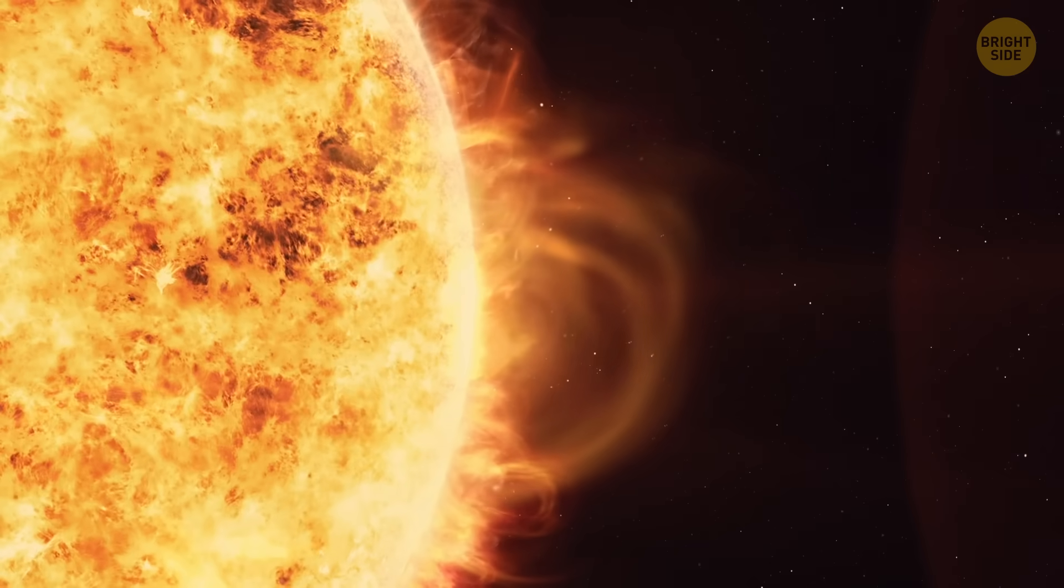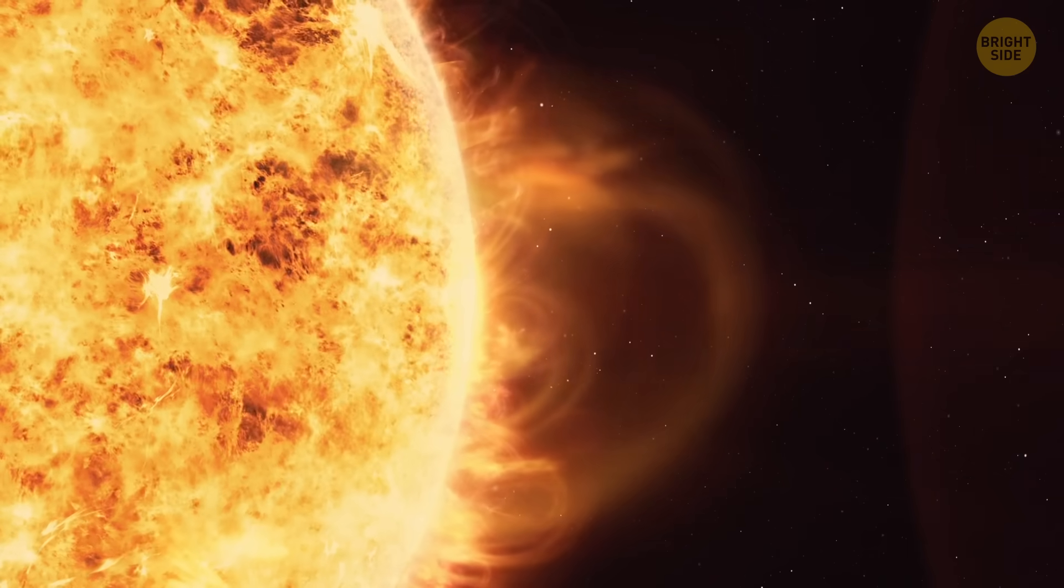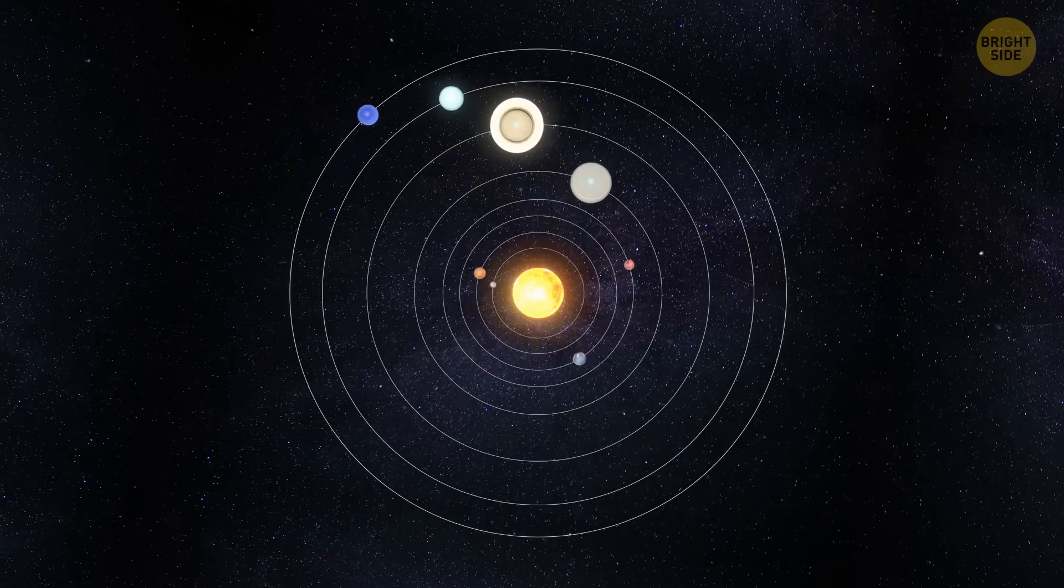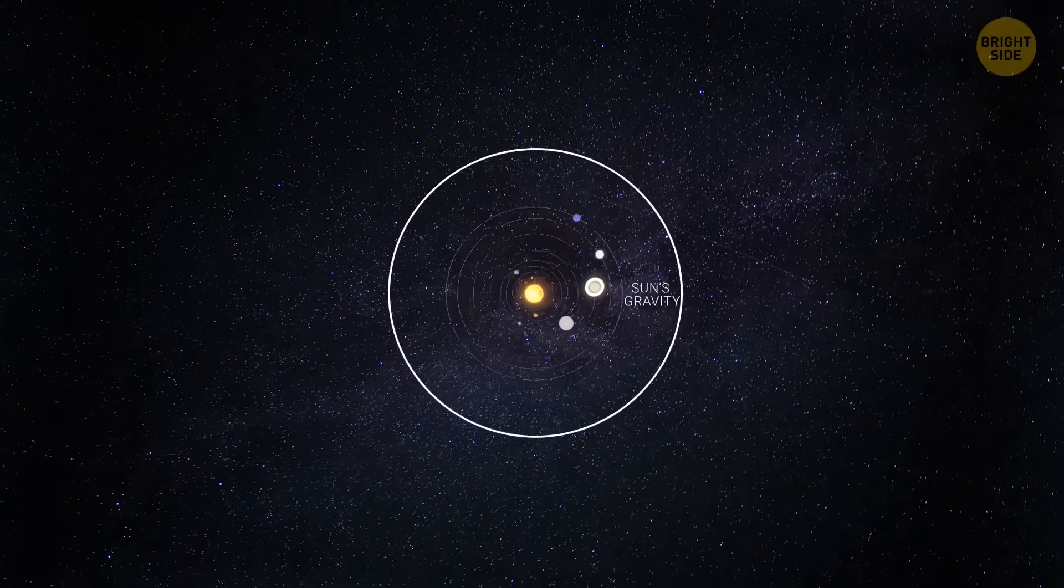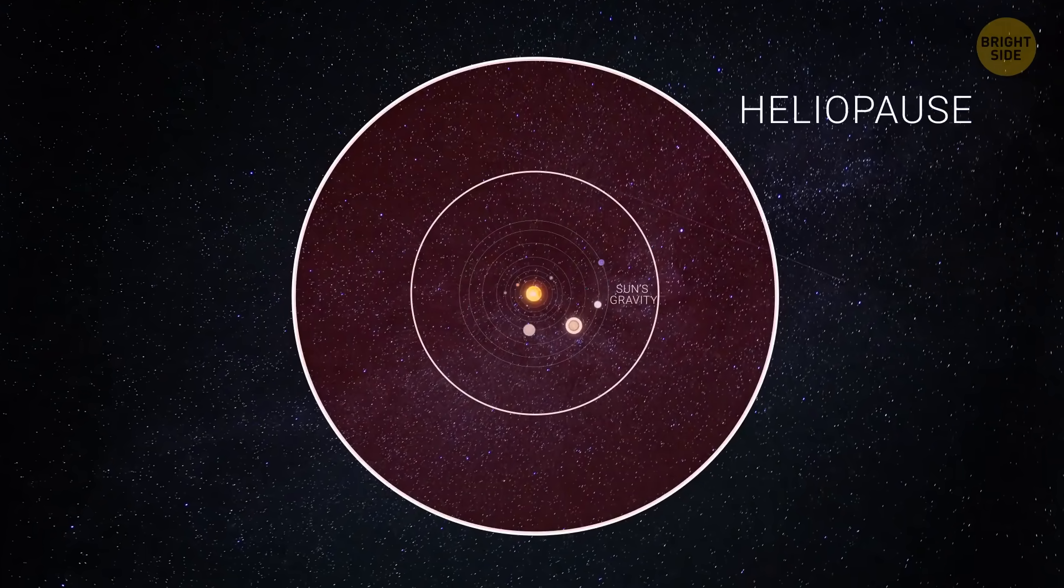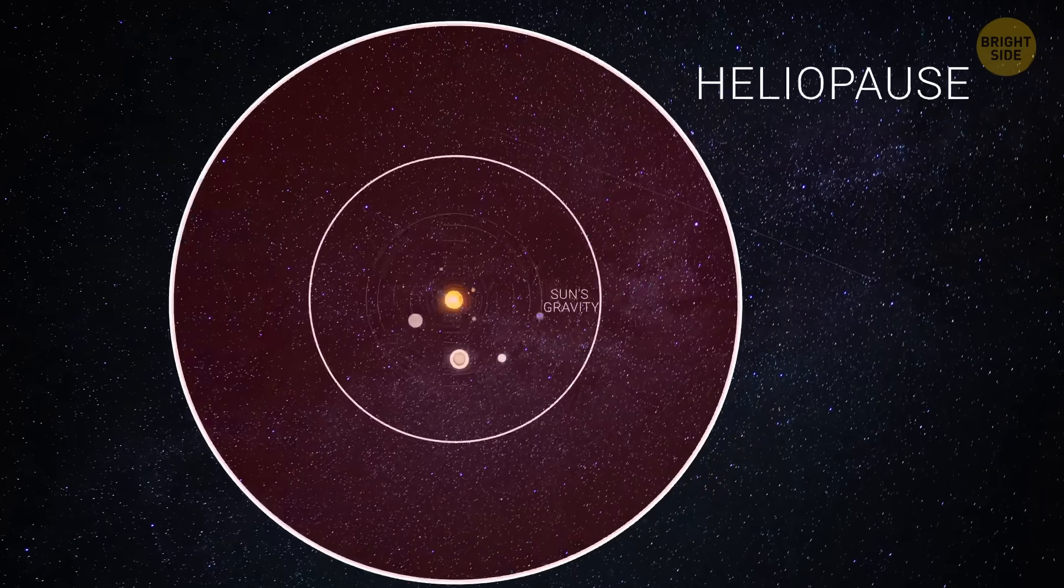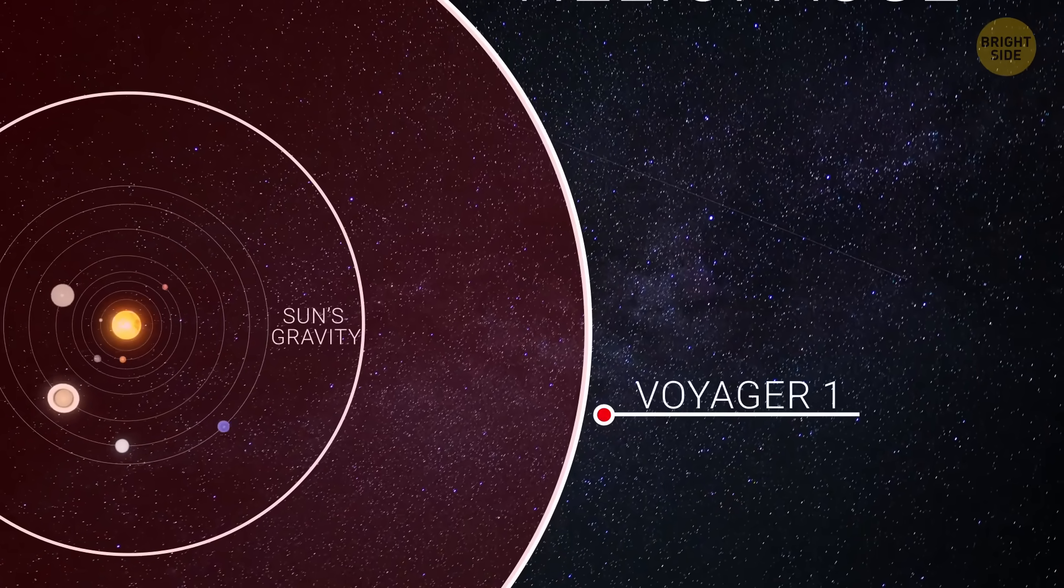Now, one more way to define the edge of the solar system is by the Sun's gravity. It might be the area where the Sun can still pull objects back toward it. And finally, we can define it by considering the heliopause, the boundary where the Sun's influence ends.